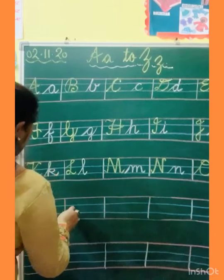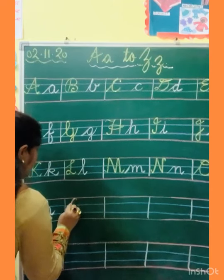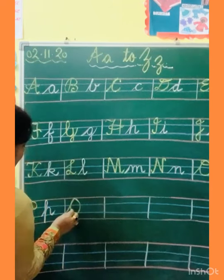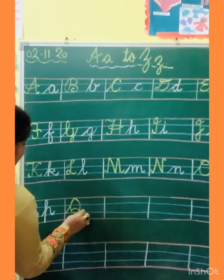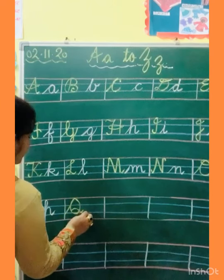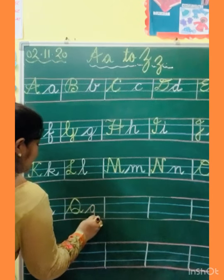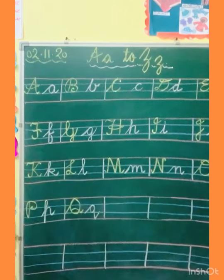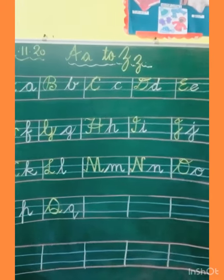After P, Q. Capital Q: slanting line, make O, touch the line, go up, and make a tail at the bottom side, and kick. This is capital Q. Small Q: slanting, make circle, standing line, and slanting line touching the third line. This is small Q.